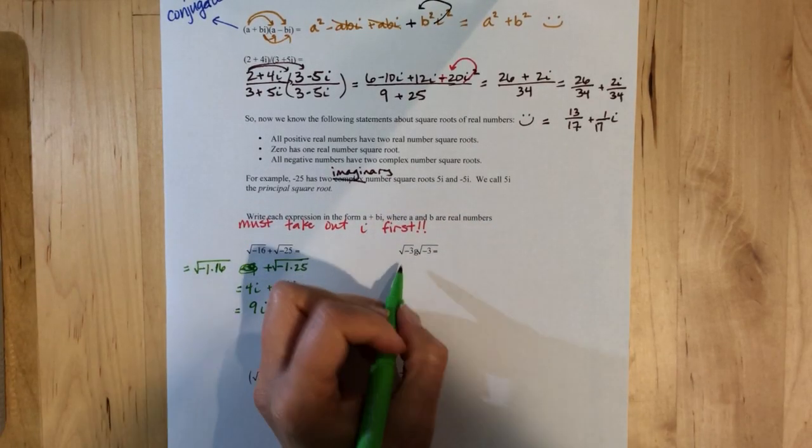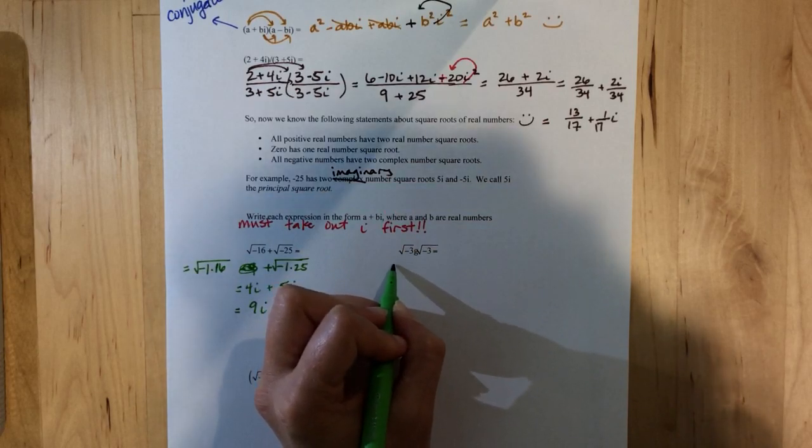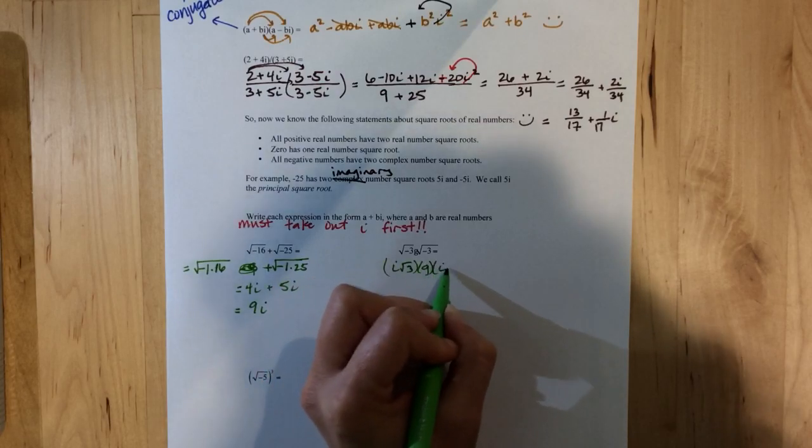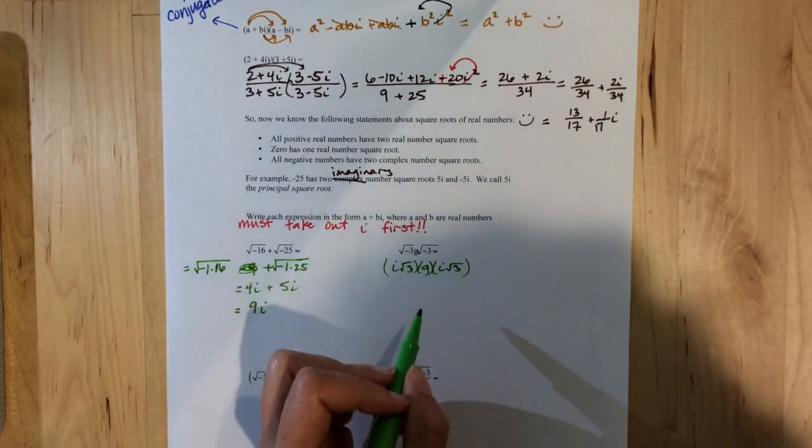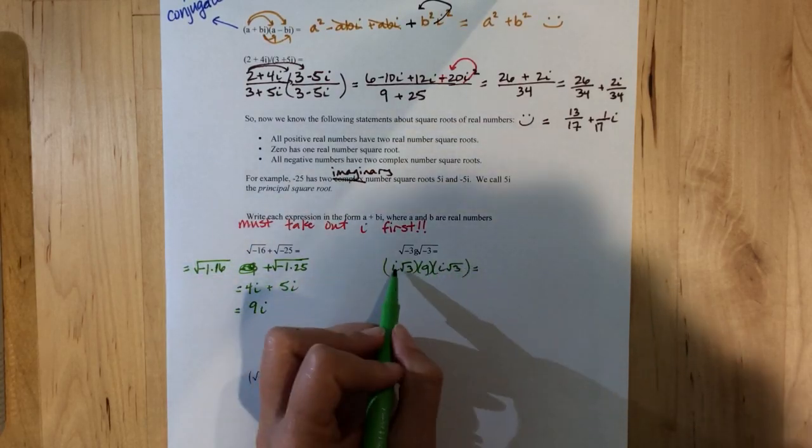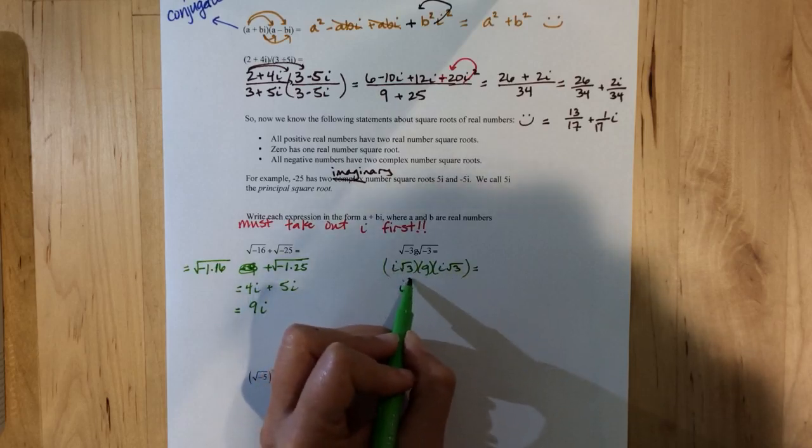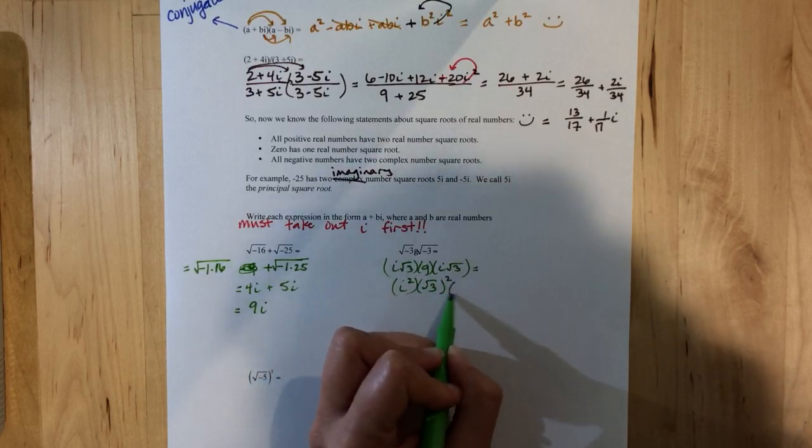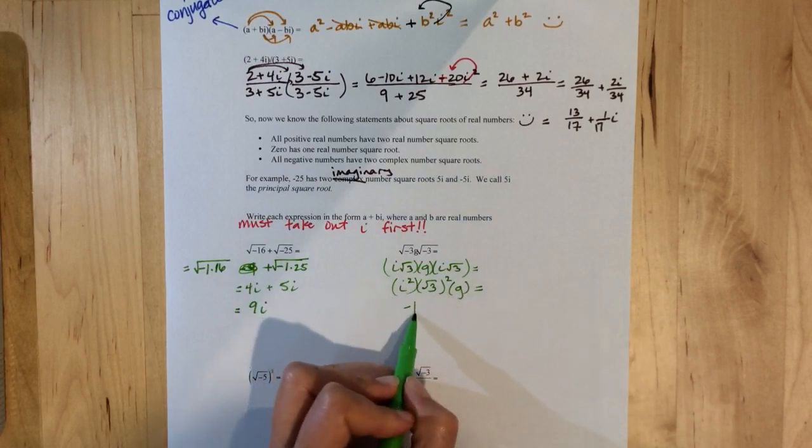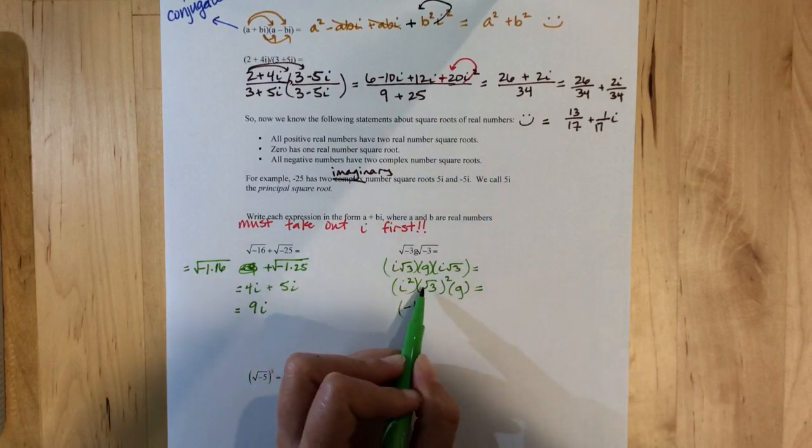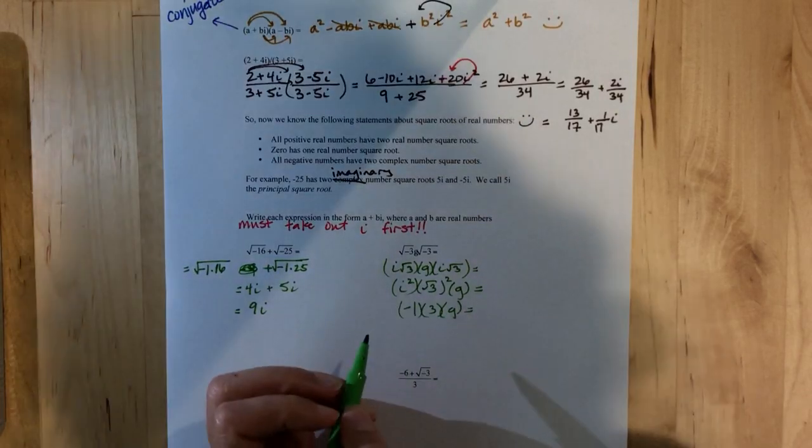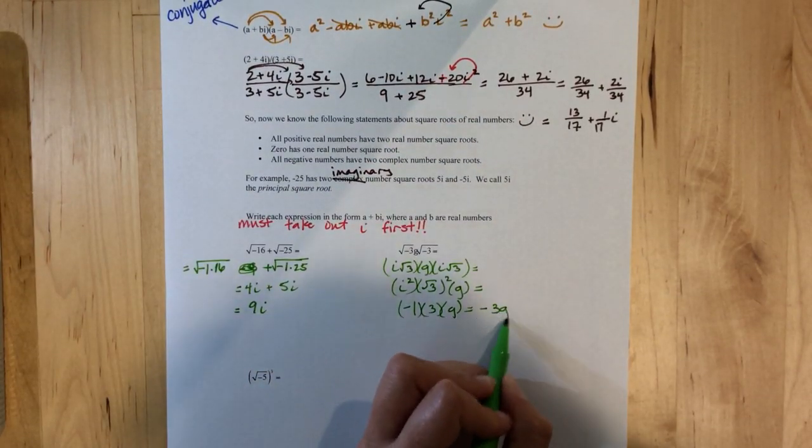Here, with this one, we've got i root 3 times i root 3, which rearranged, we have 2 i's, which is i squared, times 2 root 3's, so that's root 3 squared, and then times g. But we know i squared is negative 1, root 3 squared is 3, and g is g. So all in all, we've got negative 3g.